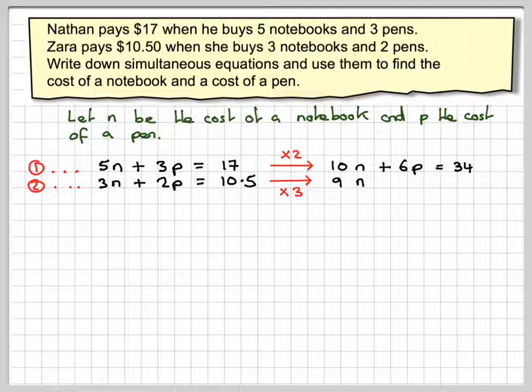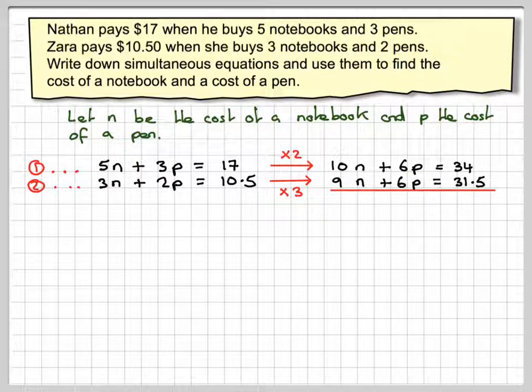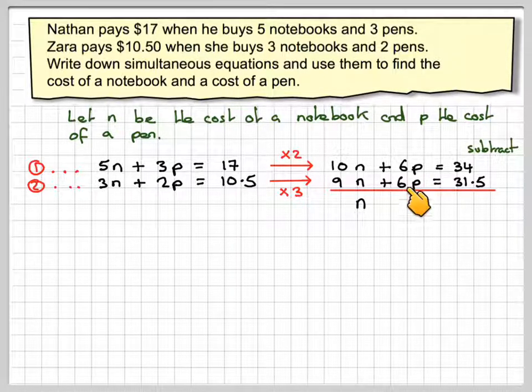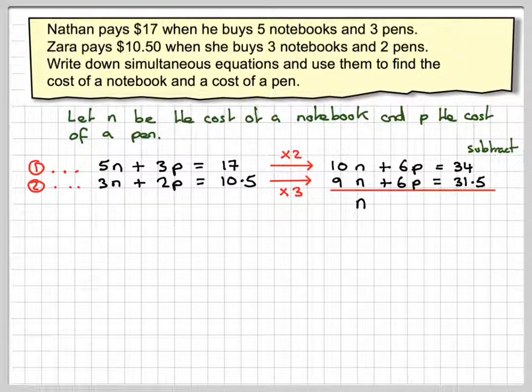And we need to multiply the bottom number by 3. So that's going to give 9N plus 6P equals 31.5. Now the signs are the same, so we need to subtract. 10N minus 9N gives me N. 6P minus 6P gives me nothing. This is why it's called the method of elimination.